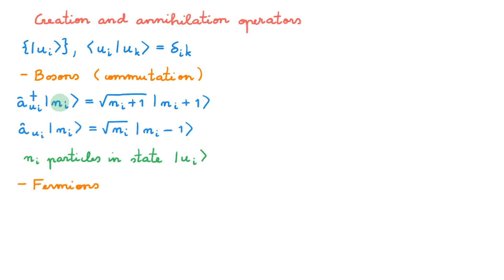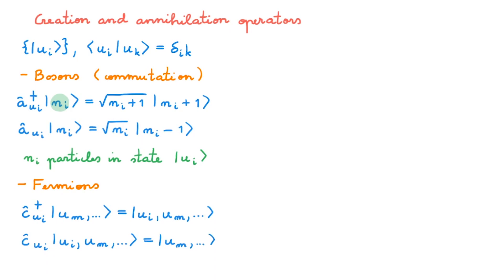For fermions, we proceed in an analogous manner. We define creation operators by their action on occupation number states, and we also define annihilation operators in a similar fashion. Fermions are subject to the Pauli exclusion principle, so we can only have a maximum of one fermion in each single particle state, so the occupation numbers are 0 or 1. This means we can directly use the single particle state labels U to describe occupation number states for fermions. The creation operator C_Ui† acting on such a state adds a particle in state Ui, which we place at the beginning of the list, and the annihilation operator removes a particle in state Ui when that state is at the beginning of the list. For fermions, the creation and annihilation operators obey anti-commutation relations to ensure totally anti-symmetric states. These things should be familiar if you've been following the video series on second quantization, but if not, make sure you check the videos on creation and annihilation operators of bosons and fermions before you proceed.